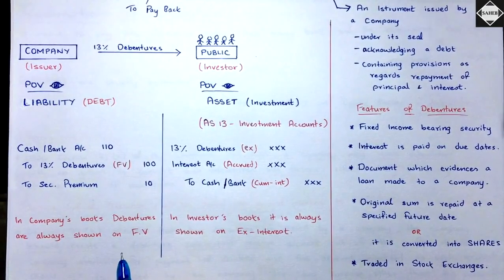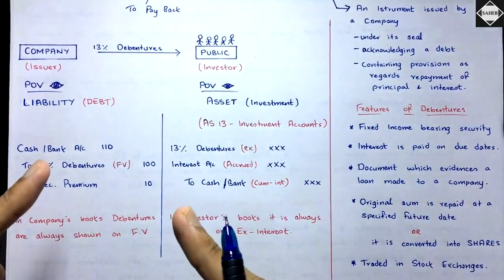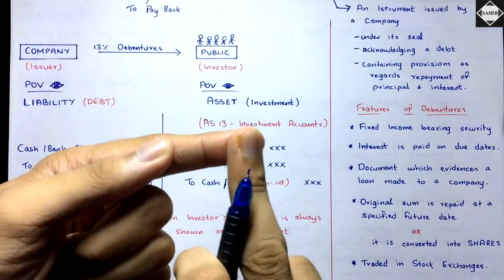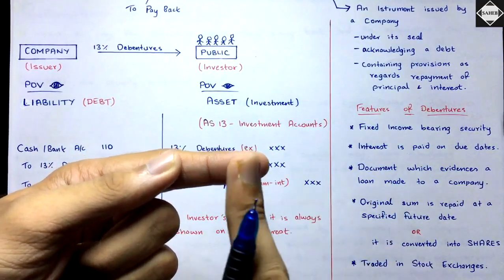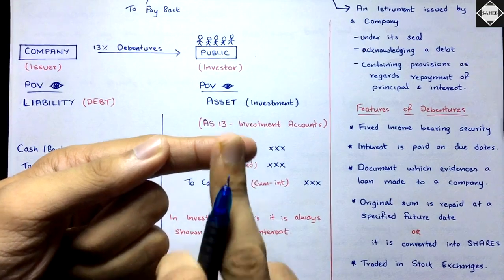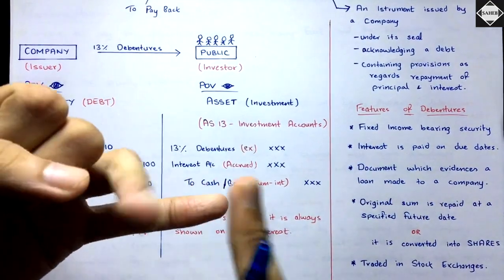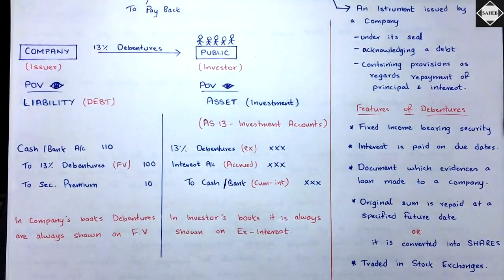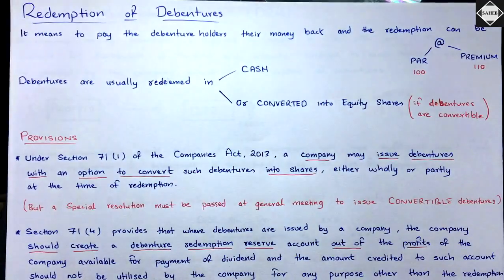In the first video, we also covered the purchase from open market method, where the company goes to the open market, purchases its own debentures, and cancels them. When the company purchases its own debentures, those debentures become the company's investment, so AS 13 applies. You need to understand how debentures are purchased and sold, and the concepts of ex-interest, cum-interest, accrued interest, and due date — all of which were covered in the first video.